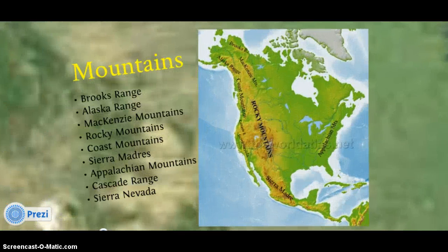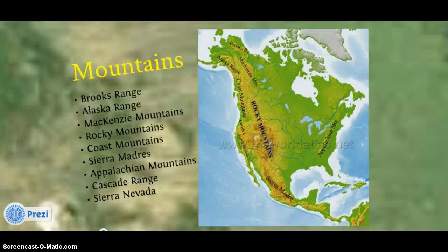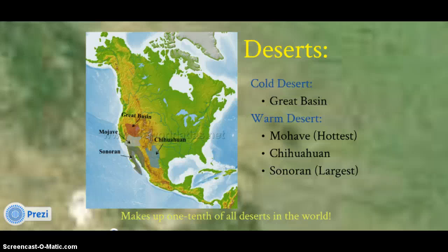This map depicts some of the major mountain ranges of North America. In the center of the rangeland country is the Rocky Mountains, bounded on the coast by the Coastal Range, the Sierra Nevada Cascade Range, and other important ranges spanning Alaska and into Mexico, including the Sierra Madres. This map also depicts the major deserts — cold deserts including the Great Basin region, and warm deserts including the Mojave, Chihuahuan, and Sonoran.